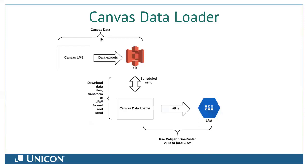Our process essentially downloads those files from Canvas data, transforms the data feed into IMS Caliper, and then loads it into our learning record warehouse. We also take supporting data provided through those same Canvas data flat files and load that into the warehouse as well — currently using another IMS standard called One Roster, because that standard allows us to represent things like courses and enrollments. Once you have all that Canvas activity data in your learning record warehouse, there are many possibilities for how you want to show that data visually.